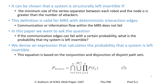In this paper, we assume that interactions are probabilistic, and thus we are interested in the probability that the system is left invertible. To achieve this goal, we derive an expression of the probability of security based on the disjunction and conjunction of sets of disjoint paths.